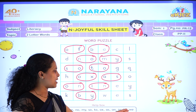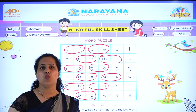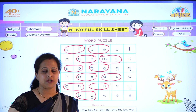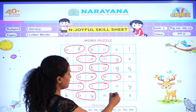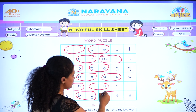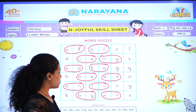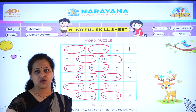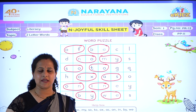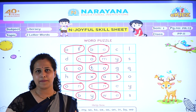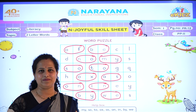Now we are left with only one word which is 'we'. W-E. Let's find out 'we'. Here is 'we'. So we have done this page, dear children. You have to do it nicely. Take pictures and send it to your ma'am. Bye.